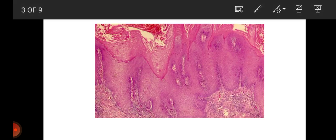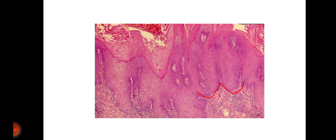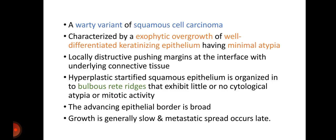Here you can see the bulbous rete ridges. The advancing epithelial border is broad, growth is generally slow, and metastatic spread occurs late.